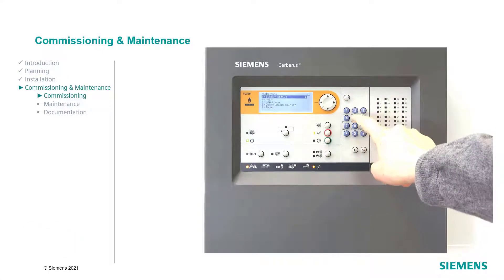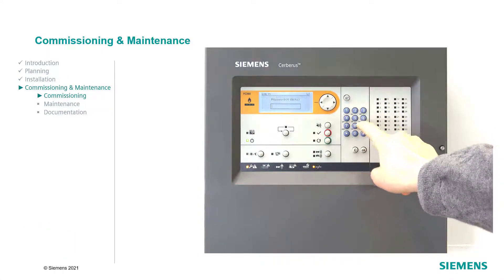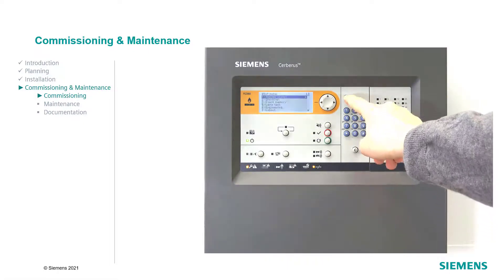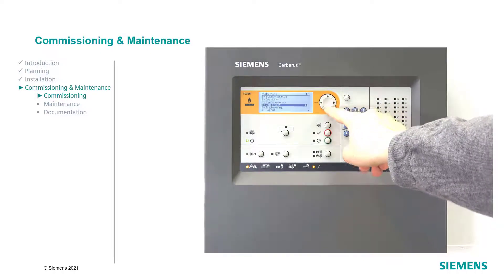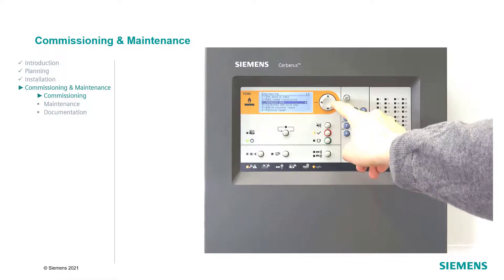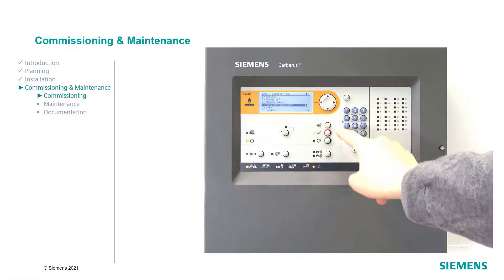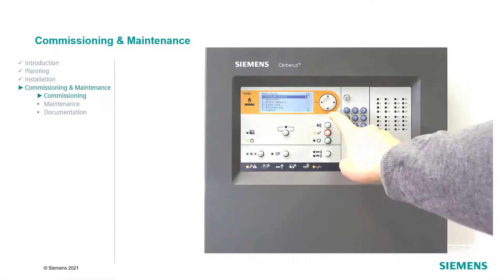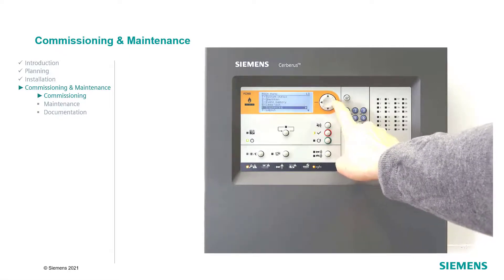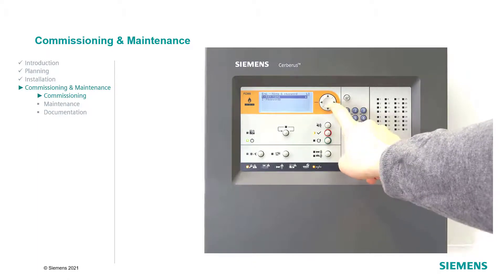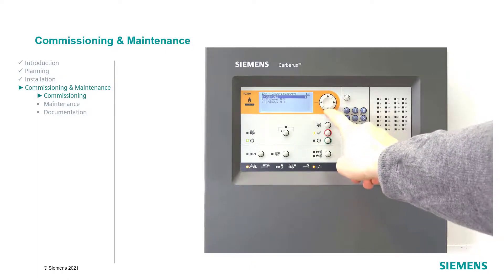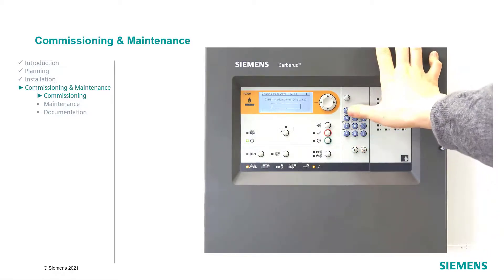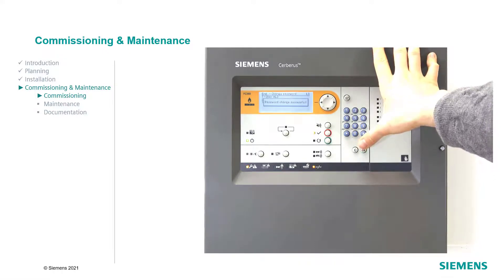If you would like to carry out the auto-configuration manually at a later time, press the C button. For the manual start of the auto-configuration, open the main menu and log in with Access Level 3 using the default pin 4x9. Then select Engineering and Detector Line, navigate to auto-configuration and confirm with the OK button. For security reasons, the default pin should be changed. Select the Engineering tab, go to Edit Name and Password, select Passwords and select the user. Enter the new password twice and confirm it with OK. Repeat these steps for all other Access Levels.